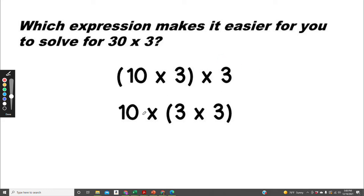In the second expression, I could say 3 times 3 equals 9 and multiply that times 10. That's easy. 9 times 10 equals 90. For me personally, I feel like the second expression would be easier. But again, whatever is easiest for you.